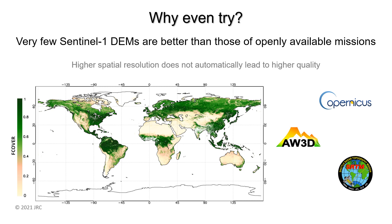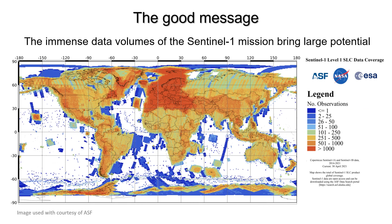The truth is, because most parts of the Earth are covered by vegetation, the quality of Sentinel-1 DEMs cannot compete with openly available DEMs such as SRTM, ALOS World 3D, or the Copernicus DEM, which are all openly available at a spatial resolution of 30 meters. Yet, the large volume of archived Sentinel-1 data brings enormous potential for this.